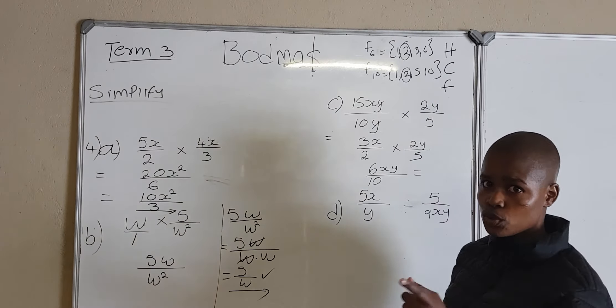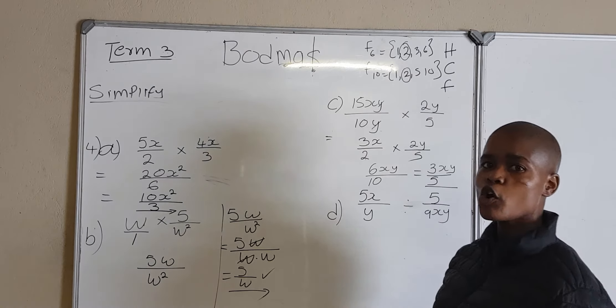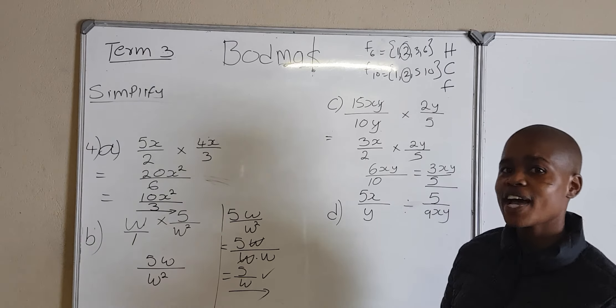So I'm going to have 3xy, and my final answer is 3xy over 5.